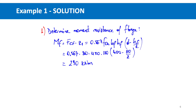To determine this, we find the moment resistance of the flange using MF = FCF × Z1, where FCF is the compressive force in the flange equal to 0.567 × fck × BF × HF, and Z1 = d − HF/2, the lever arm. Performing this multiplication gives a moment capacity of the flange of 290 kNm.